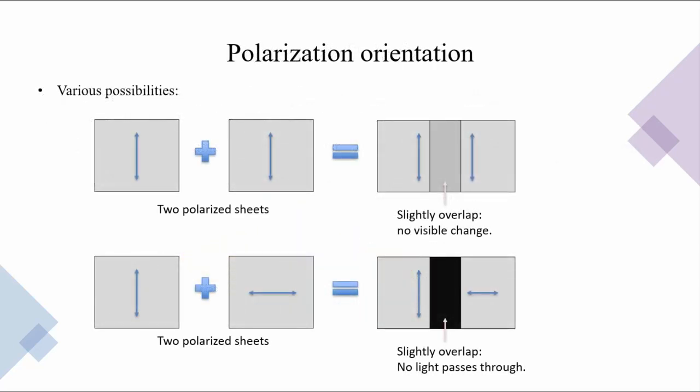Let us examine several orientations of the polarization directions. In the first case, two vertical directions are applied one after another, as shown in the top picture. Since their direction is the same, there is no visible change, and photons vertically polarized pass through both sheets. In the second example at the bottom, one vertical and one horizontally polarized sheet are applied. The light that is vertically polarized passes through the first sheet but cannot pass through the second, and hence no light passes through both.